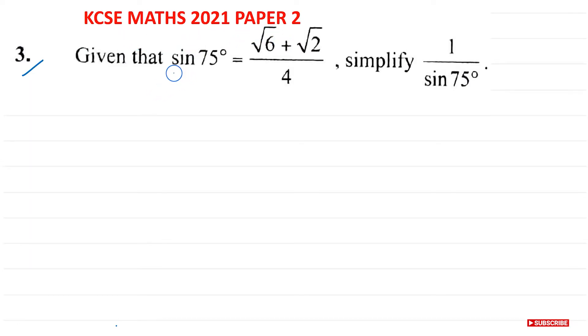We are given sine 75 degrees equals root 6 plus root 2 over 4. We are asked to simplify 1 over sine 75 degrees. So 1 over sine 75 degrees is just the reciprocal of sine 75 degrees.